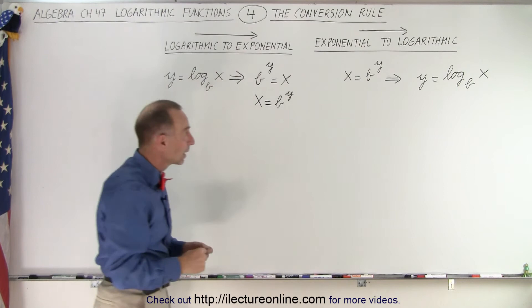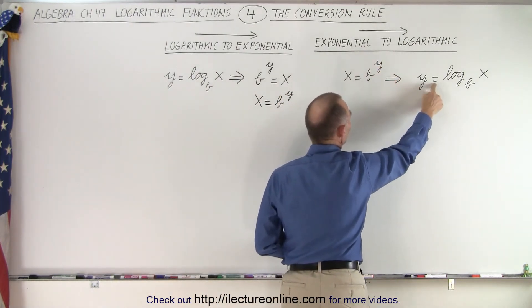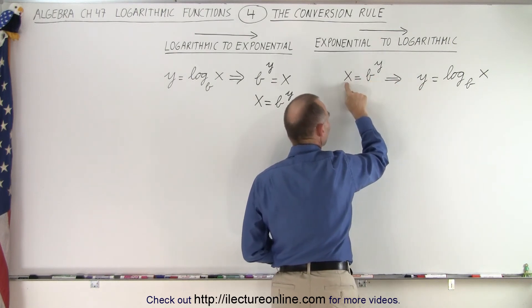So notice again, we have x equals b to the y, so the exponent goes to the left side of the equal sign. Then you take the log base b of x.